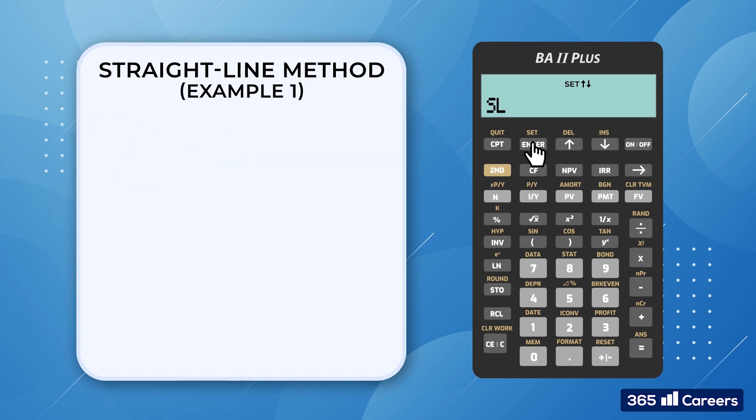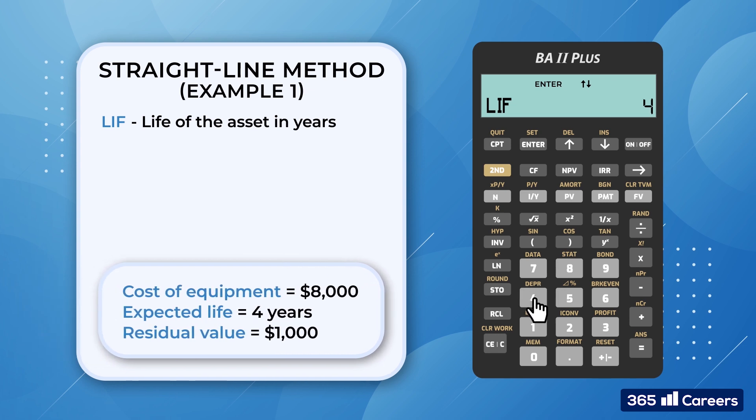Alright, now we are ready to add the data we will be working with. To do that, we scroll down. The first term is LIF, which stands for the life of the asset in years. We input 4, followed by enter, and then we press scroll down another time. The next term is MO1, the starting month. We use M to indicate to the calculator the period when the asset was added to our balance sheet. We assume that the equipment is acquired at the beginning of the financial year, so we leave the term to its default value of 1.